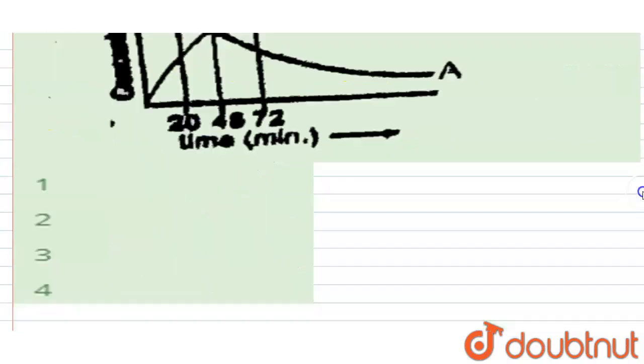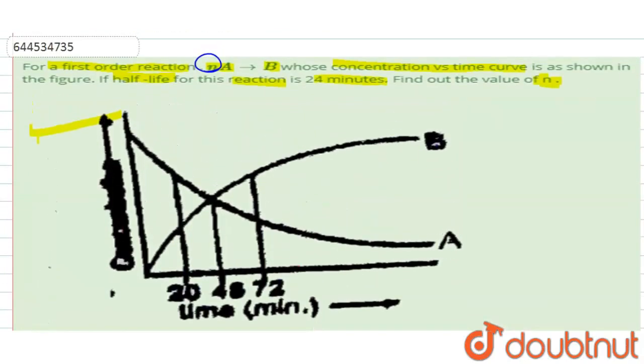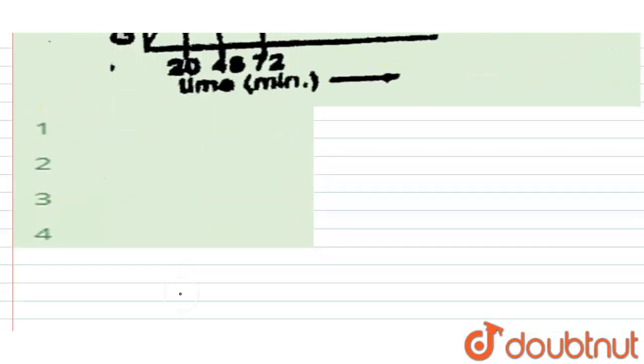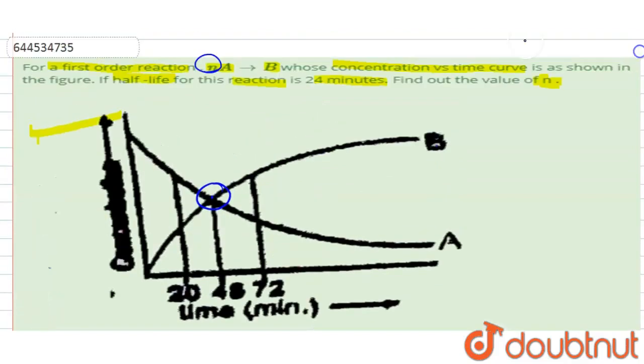Four options are given here, select the correct one. So see here at this point, time is 48 minutes, and here concentration of A is equal to concentration of B at time t equals 48 minutes. Then it is said the half-life for this reaction is 24 minutes.